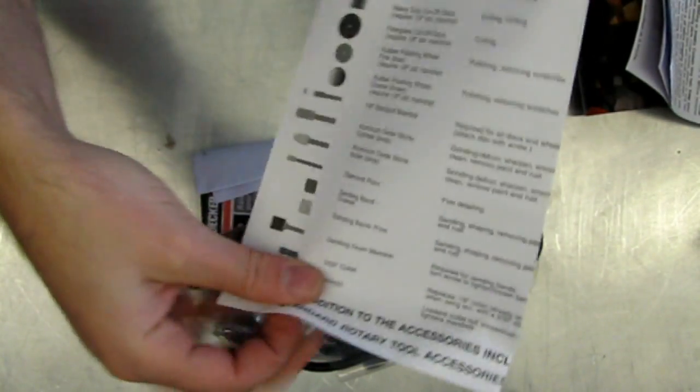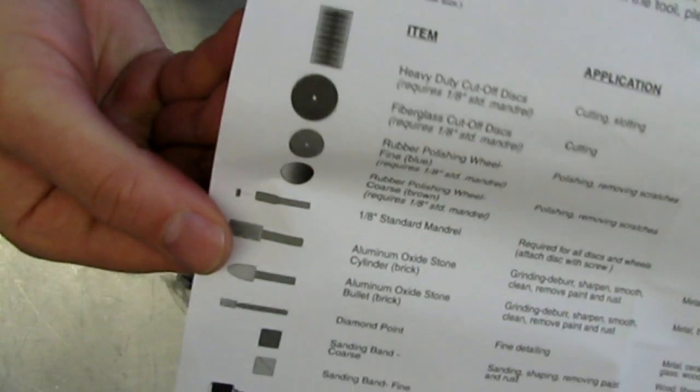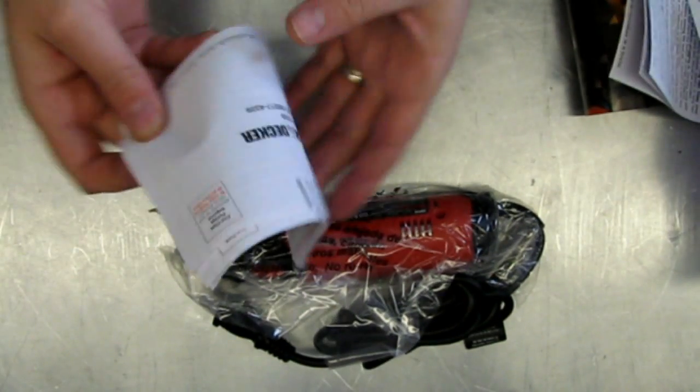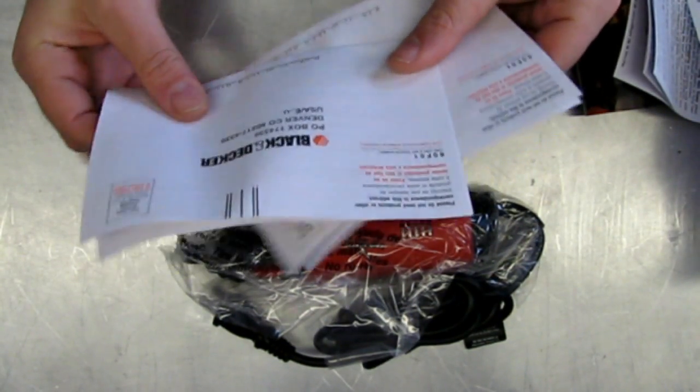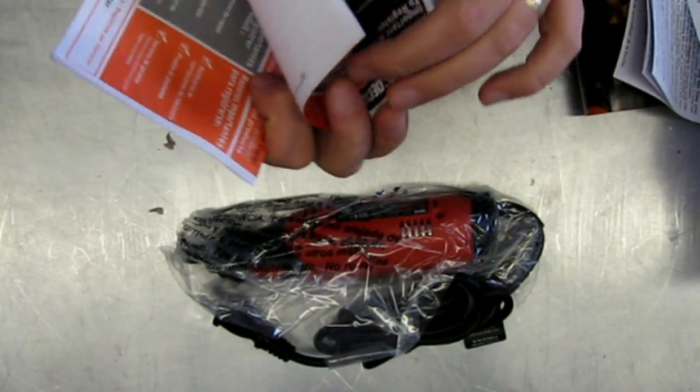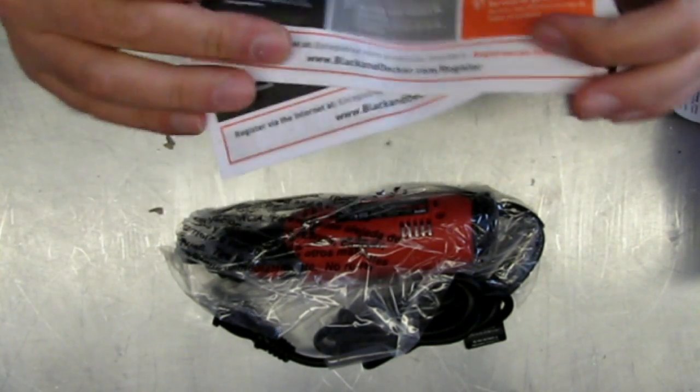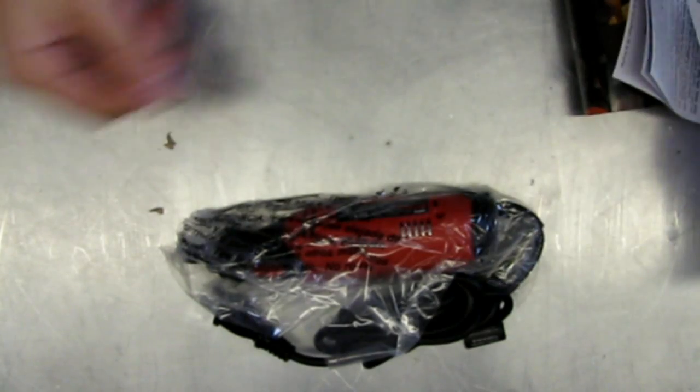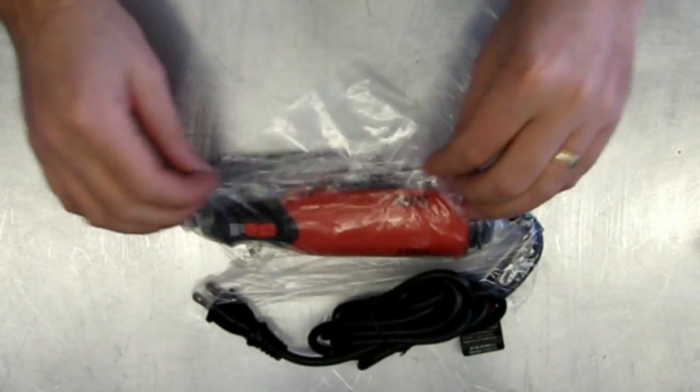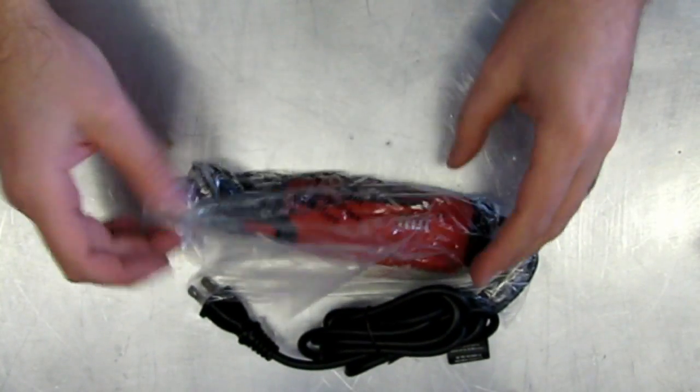Ooh, a little outline of all the Black & Decker accessories for your rotary tool. That's nice. And your product warranty. But enough of the paperwork. Let's get down to the nitty-gritty here.